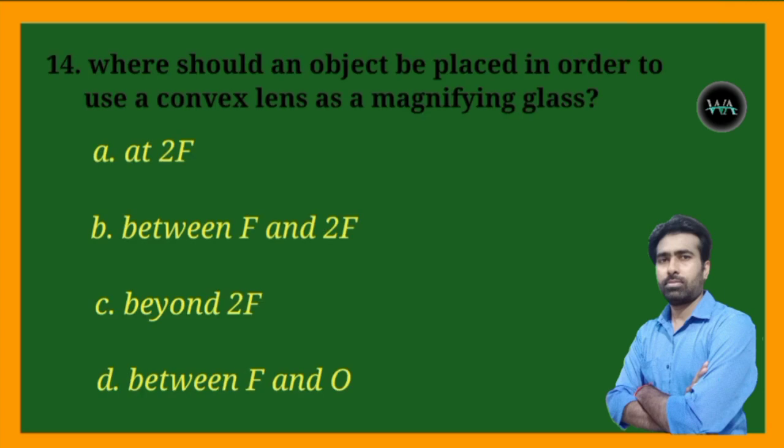Next question: where should an object be placed in order to use a convex lens as a magnifying glass? At 2f, between f and 2f, beyond 2f, or between f and O?